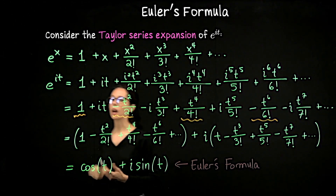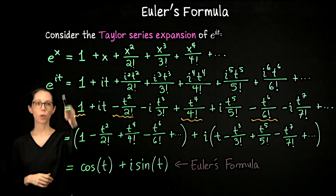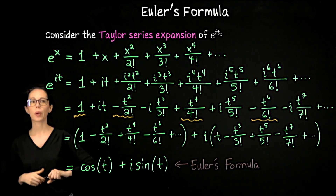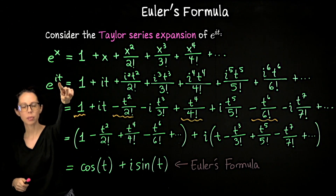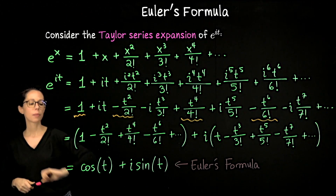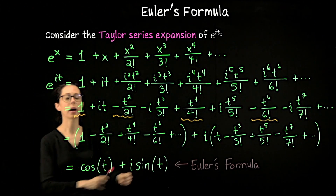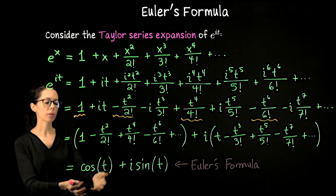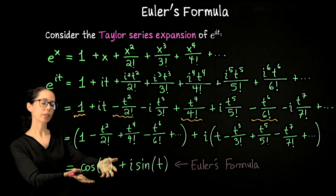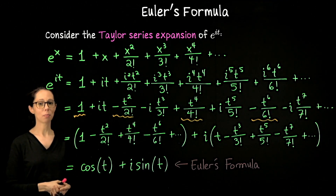Euler's formula tells us that a complex exponential of the form e raised to a pure imaginary number — where i is imaginary and t is real — can be written as cosine of the real part plus i sine of the real part. This is a complex number whose real component is cosine and whose imaginary component is sine.